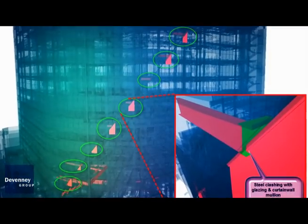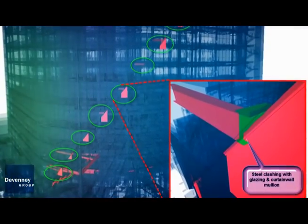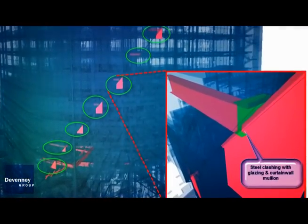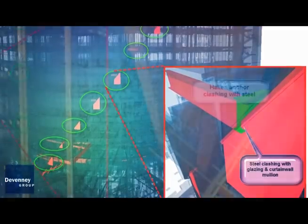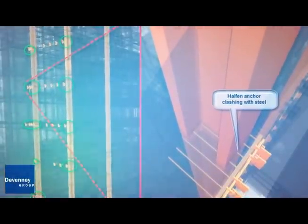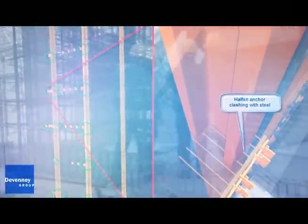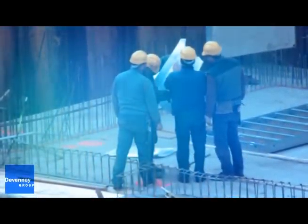By reviewing the designed systems in a virtual model, we can immediately propose alternative solutions to uncoordinated designs. This level of collaboration between team members ensures a high level of coordinated design drawings, thereby reducing the number of questions coming from the field during construction.